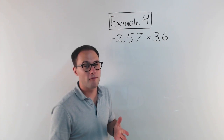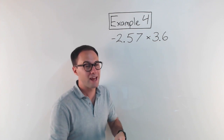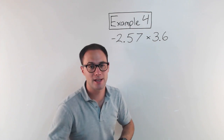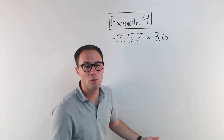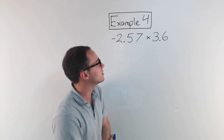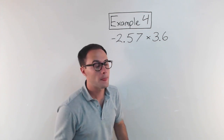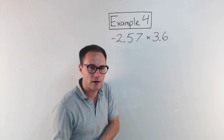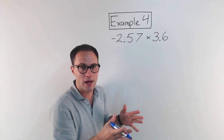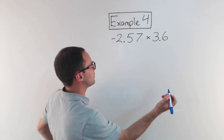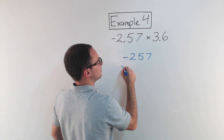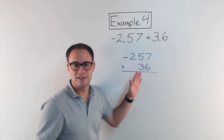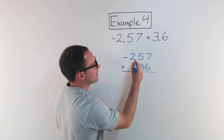Let's try one more example. Example four — we can't forget about decimals; they're also rational numbers. Negative two-point-five-seven times three-point-six. The only real difference is the negative. When multiplying decimals, we don't have to line up the decimal point. My suggestion is to pretend the decimals aren't there, set up your problem, and then worry about the decimals after. So instead of negative two-point-five-seven, I'm going to think of it as two hundred fifty-seven times thirty-six. Now I'll put the decimals back so I don't forget.